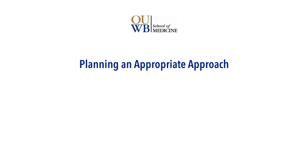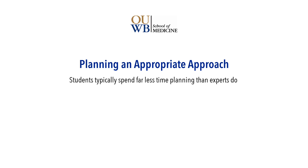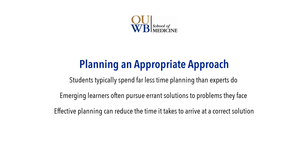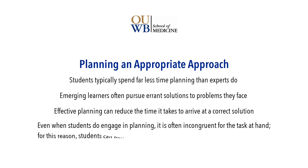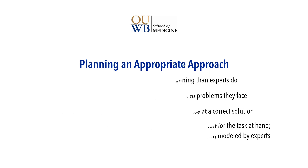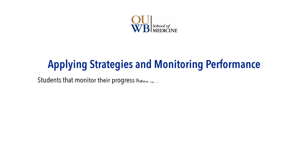When compared to experts, emerging learners spend very little time planning how to accomplish various tasks. Due to this lack of planning, emerging learners often waste a great deal of time pursuing errant solutions. Research shows that planning is an effective method for choosing a viable solution to a problem, but students often fail to recognize that connection. Even when students do engage in planning, they frequently make plans that are incongruent for the task at hand.